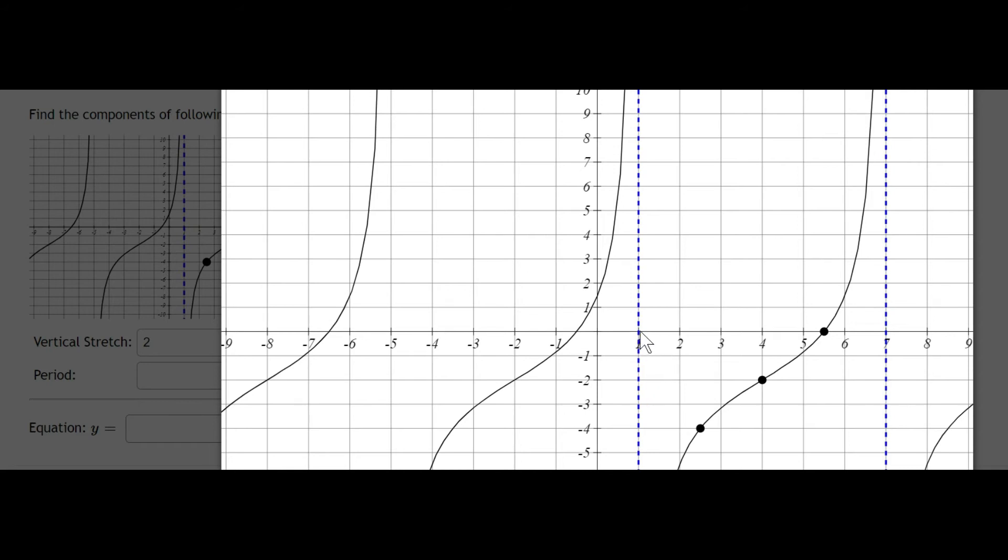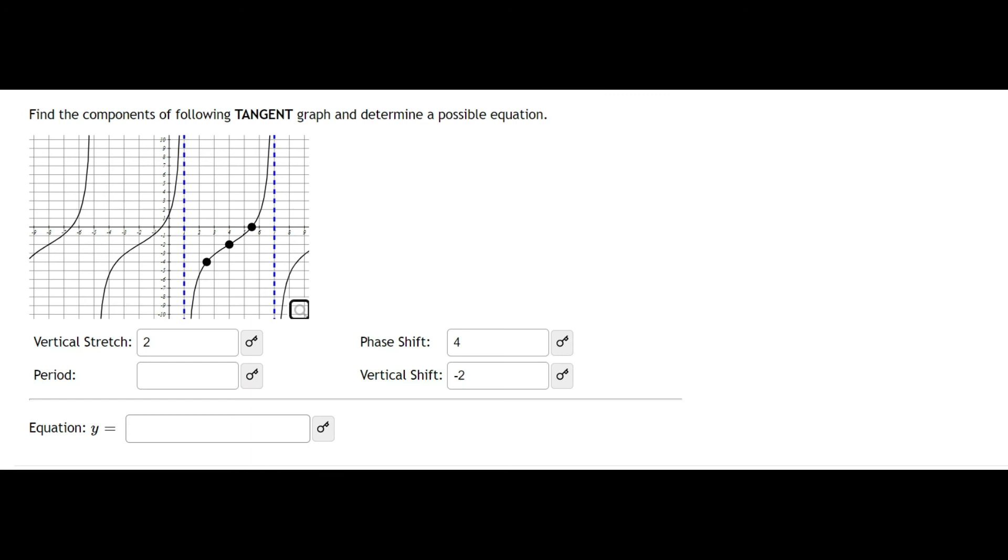So if I can just count the distance from 1 to 7, that's going to be 6. So that's going to be the period. So I'll come back here and say 6. All right, these are all of my components of the tangent graph. Now they want the equation.